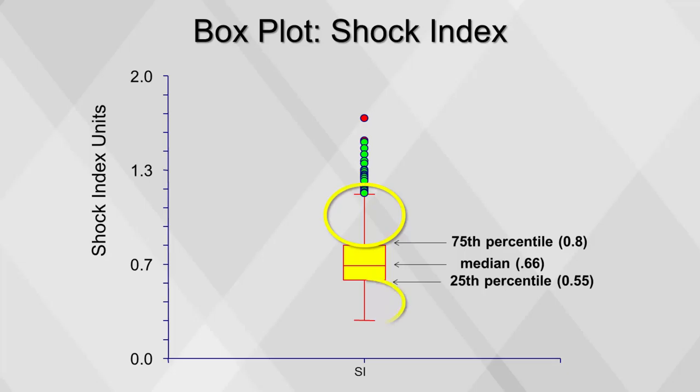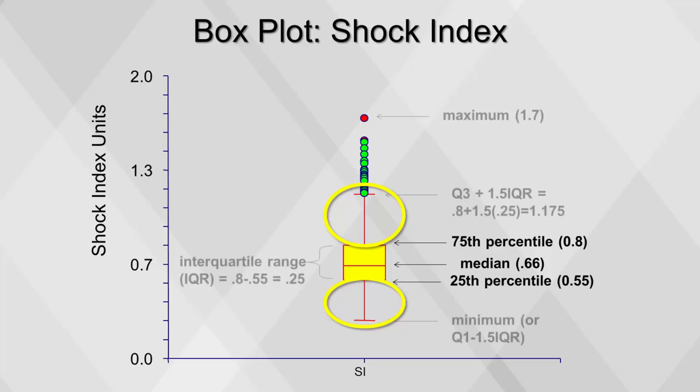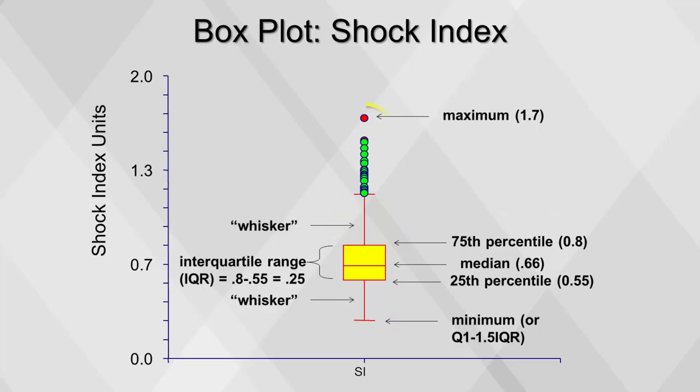The whiskers in the box plot do not necessarily represent the minimum and maximum values. They show the minimum and maximum only if these values are less than 1.5 times the interquartile range. If the values are bigger than that, the whiskers represent 1.5 times the interquartile range, or IQR.